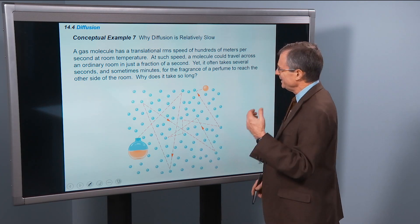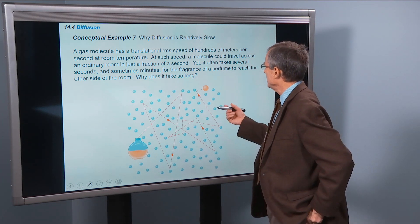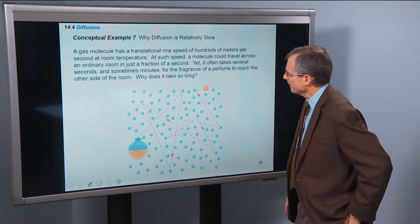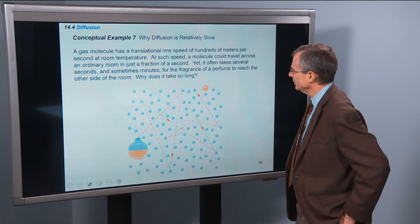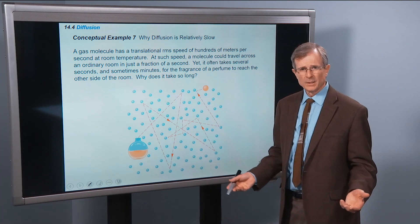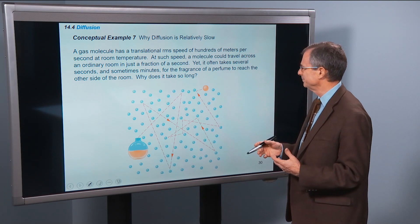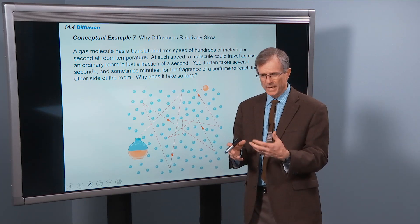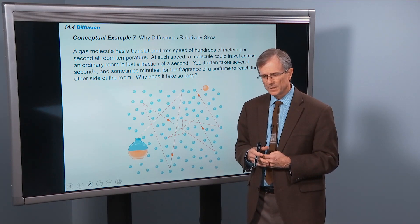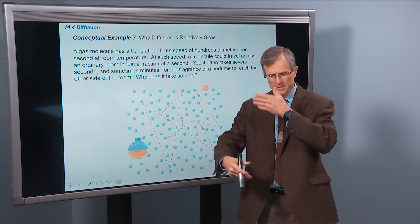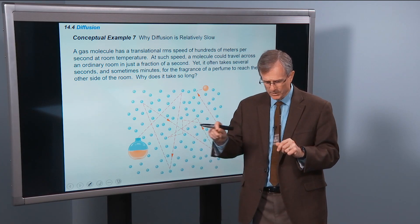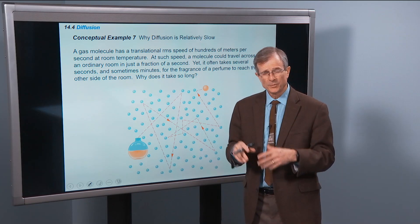So the gas molecules have translational RMS speeds of hundreds of meters per second, hundreds of miles per hour at room temperature. At such speeds, a molecule could travel across an ordinary room in just a fraction of a second. Well, why isn't it that then, like somebody walks in the room and has perfume on, you can't smell the perfume immediately? And usually, actually, you're going to smell the perfume because of air currents. But even if you're able to keep the air really still and allow it to travel by diffusion, it would take you a long time before you smell that perfume.